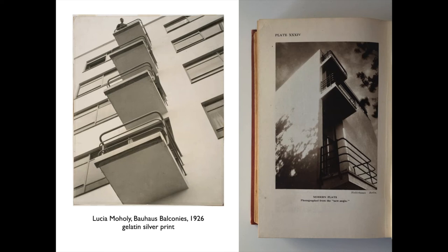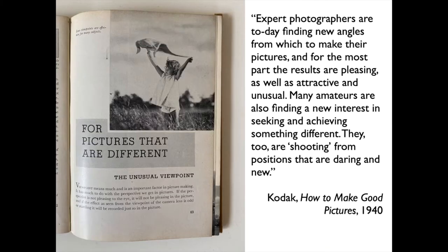Jacob Duchesne recommended that art amateurs seek out angle shots, either in mid-morning or late afternoon, when an idle walk about town should yield a good harvest of photos. His graphic compositions gazed up at skyscrapers, exaggerating their converging orthogonal lines. One amateur textbook reproduced an image strongly reminiscent of Lucia Moholy's Bauhaus Balcony's photograph, captioning it 'modern flats photographed from the new angle.' The 1940 edition of Kodak's How to Make Good Pictures included a new section titled The Unusual Vantage Point. The editors wrote that expert photographers are today finding new angles, and many amateurs are also finding a new interest in seeking something different — shooting from positions that are daring and new.